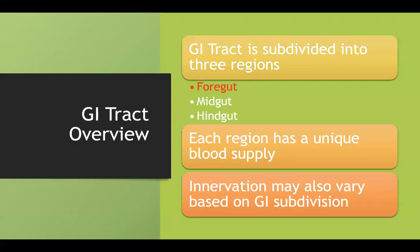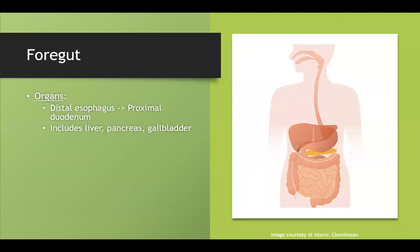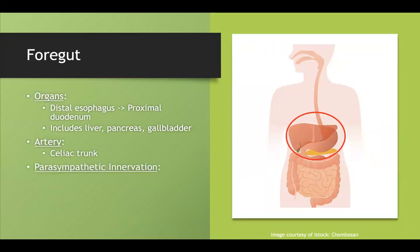Because they're located in different regions embryologically, they also have different blood supplies that promote their growth. The foregut starts in the distal esophagus and ends in the proximal duodenum, and it also includes accessory organs like the liver, pancreas, and gallbladder. The artery that supplies this is the celiac trunk, and the parasympathetic nerve supplying this region is the vagus nerve.